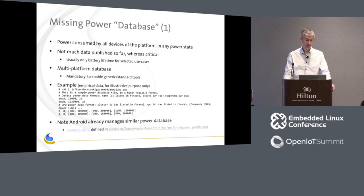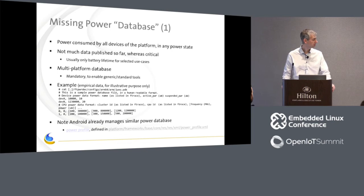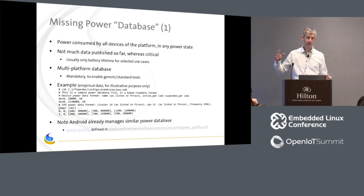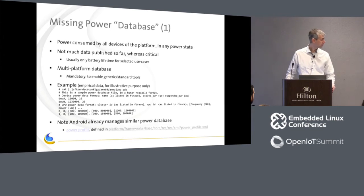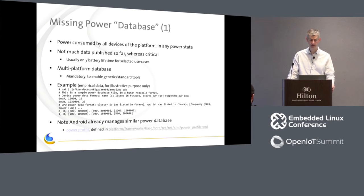As a very basic example, it could be a text file describing the device name and power consumption in given states. The idea is that a tool could take the FTrace trace, take this data, and combine everything to estimate the power consumption. For people dealing with Android, there is already a similar power database called PowerProfile — an XML file — which Android uses to display battery statistics in the settings application.